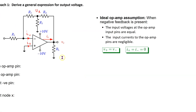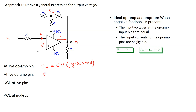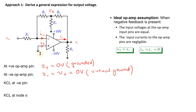Let us write the circuit equation at the positive op-amp pin. The voltage V plus is equal to zero volts, because this pin is physically grounded. Applying the ideal op-amp assumption, the voltage at the negative pin is equal to the voltage at the positive pin, which is zero volts. This zero voltage appearing at the negative pin is called a virtual ground, because this pin is not physically grounded but has zero voltage across it.